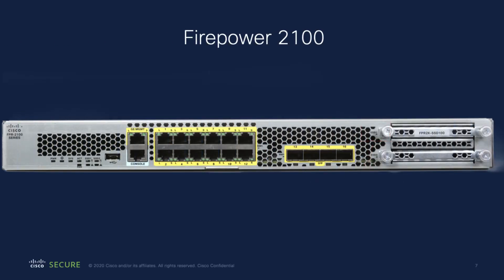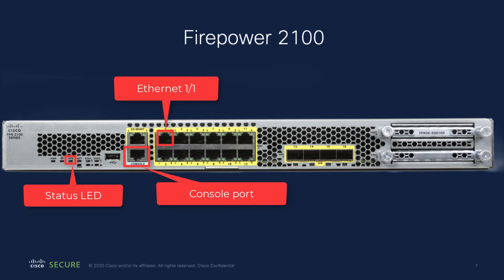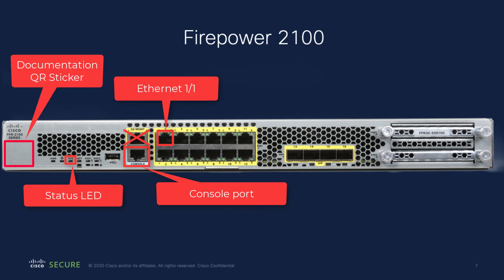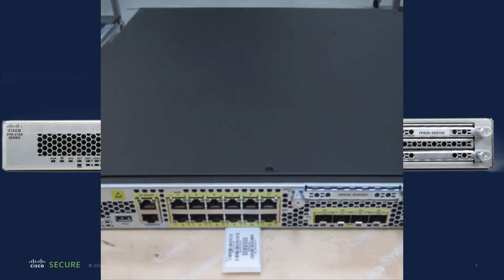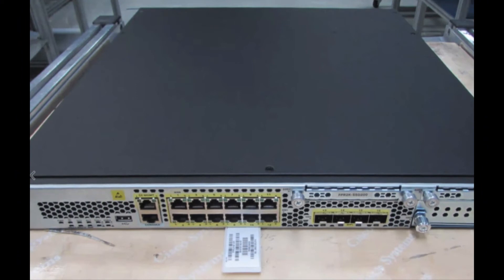Here are the status LED, Ethernet port 1-1, and the console port on a Firepower 2100. The documentation QR sticker will be here. If you need it, the serial number for the Firepower 2100 can be found on a pull-out tab on the front of the device.